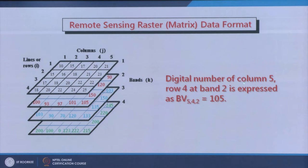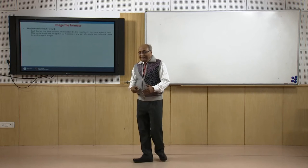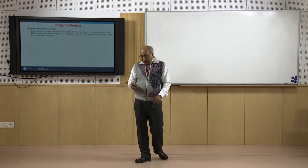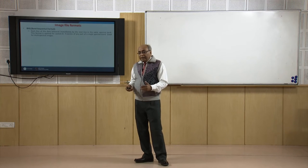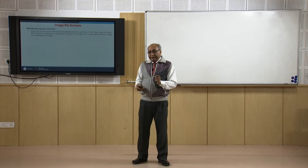The digital number for, say, column 5 row 4 is expressed as VB542, and I can address it very easily using column number or row number. When we get data from satellites during data acquisition, we store it in certain formats, which we will quickly review.